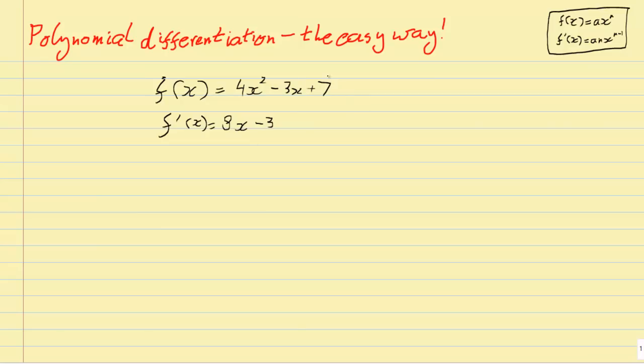We just leave it as negative 3. And this plus 7, if we really want to understand what's going on in the background, this is 7 times x to the power of 0. Then when we do 7 times 0, that's just going to end up down here. We're just going to end up with a plus 0.